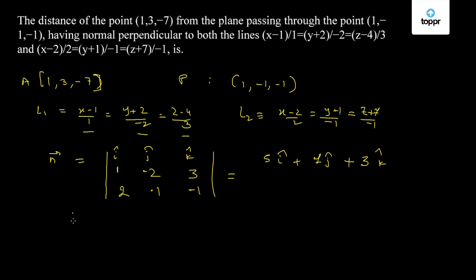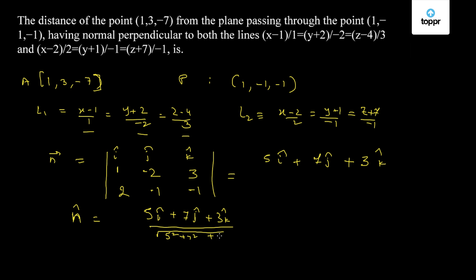The unit vector in the normal direction, n-cap, is given by 5i-cap plus 7j-cap plus 3k-cap divided by the square root of 5 squared plus 7 squared plus 3 squared. This comes out to be 5i-cap plus 7j-cap plus 3k-cap upon root 83.